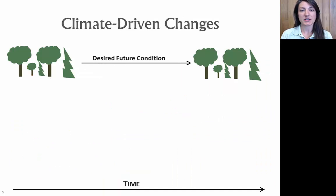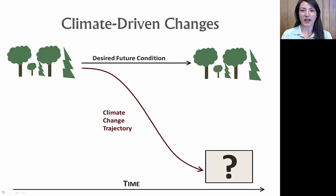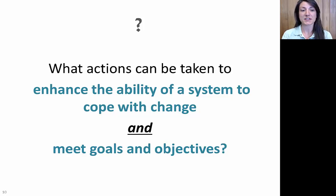The desired future condition in a business-as-usual approach assumes we continue practicing forest management as we have in the past, but we don't fully understand the impact a changing climate will have on stand development. To accommodate that uncertainty, we should approach silvicultural decision-making by considering the potential for changing conditions to influence forest dynamics and what we can do to limit those effects. The big question is: what actions can be taken to enhance the ability of a system to cope with change and continue to meet goals and objectives, and how can managers develop plans for those actions in a systematic, organized way despite the uncertain climate change future?